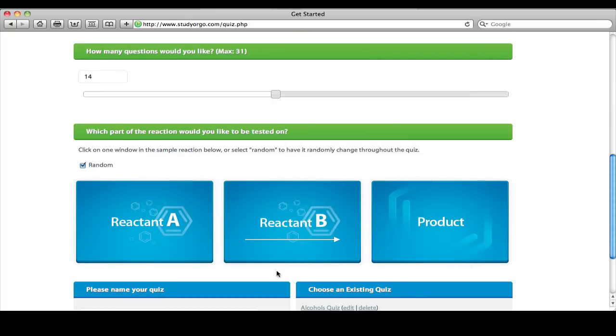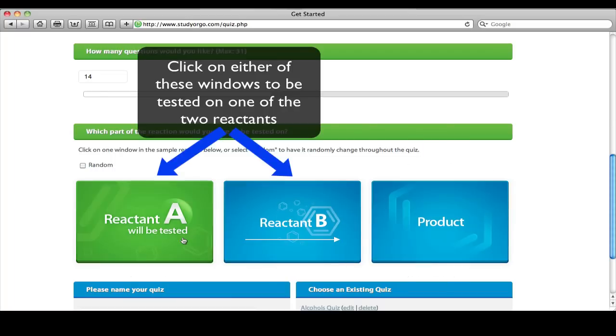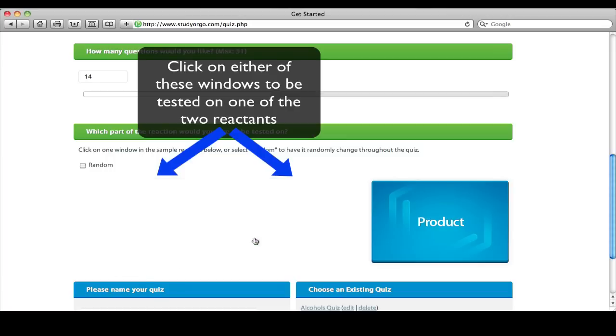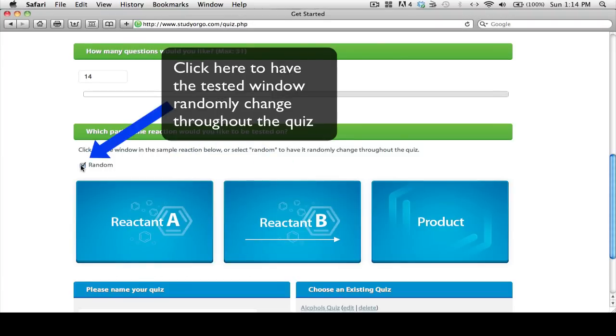Let's say you want to be given the two reactants and be tested on the product. No problem. Or let's say you want to be given the product and only one of the reactants and be tested on the other reactant. We've got you covered. Or let us pick at random for you.